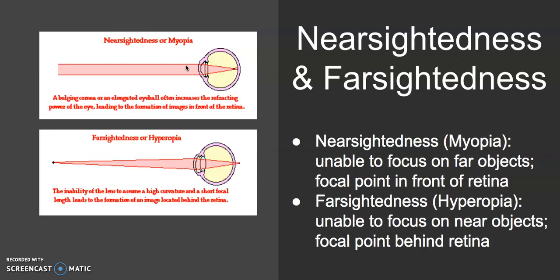We can think about these lenses in the context of farsightedness and nearsightedness. Nearsightedness, also called myopia, involves a bulging cornea or elongated eyeball that increases refraction, leading to the formation of images in front of the retina rather than on it. You're unable to focus on far away objects — you're good at seeing near, bad at seeing far.